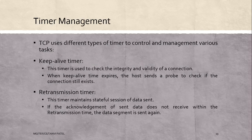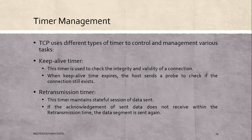Next is timer management. TCP uses different types of timers to control and manage various tasks. First is the keep-alive timer: this timer is used to check the integrity and validity of a connection; when the keep-alive timer expires, the host sends a probe to check if the connection still exists. Next is the retransmission timer: this timer maintains a stateful session of data sent; if the acknowledgement of sent data is not received within the retransmission time, the data segment is sent again.